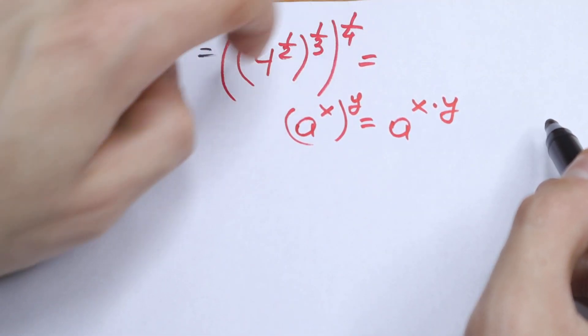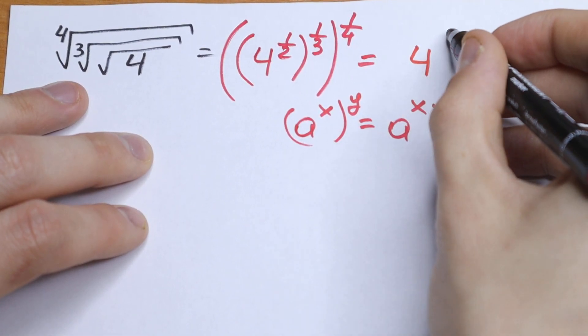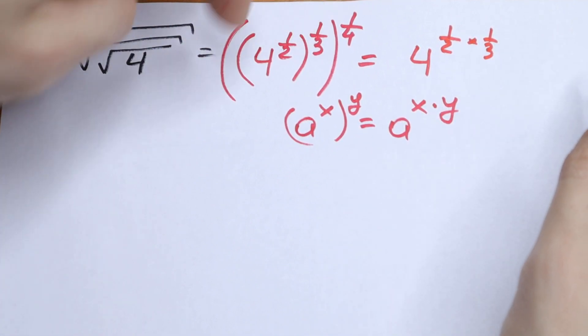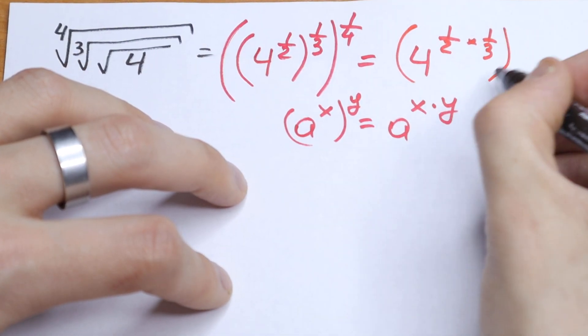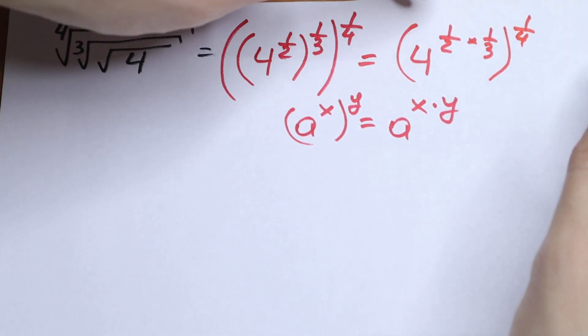Moreover, we have a lot of powers right here, so we can write it as 4 to the power one half times one third at first. Let's use this rule right here, one half and one third, and raise to the power one fourth. So, let's use this rule step by step.